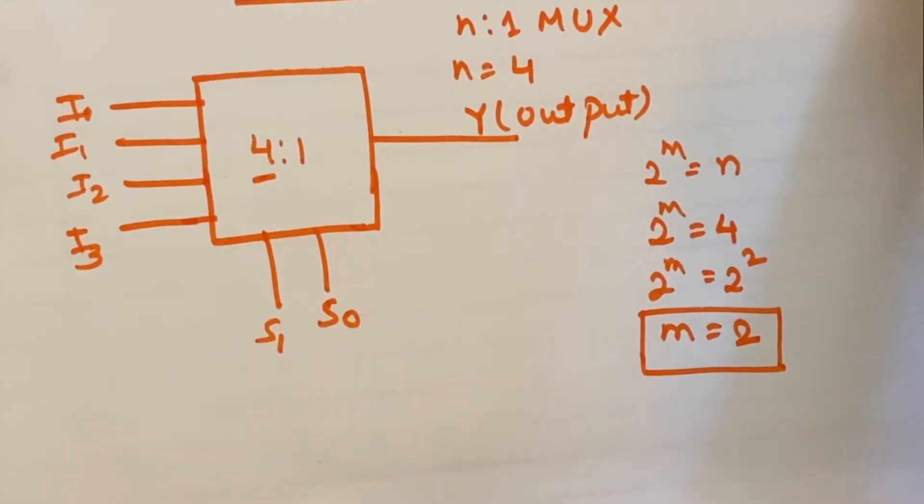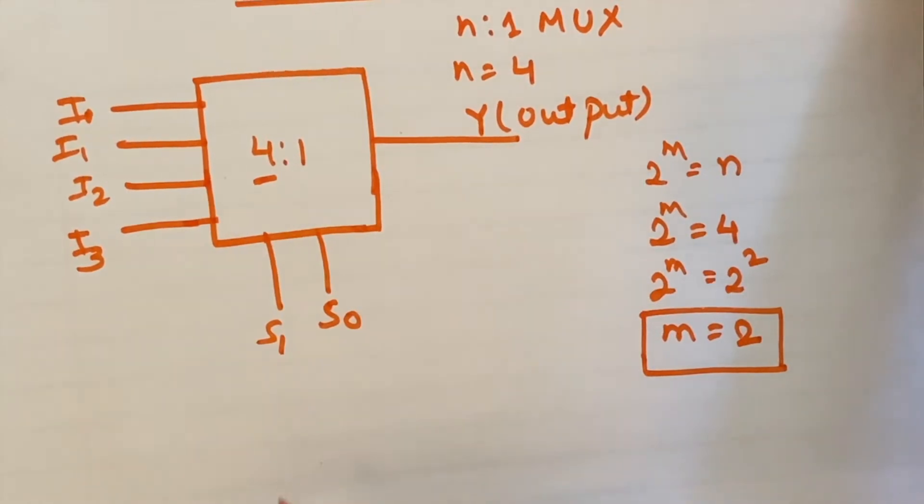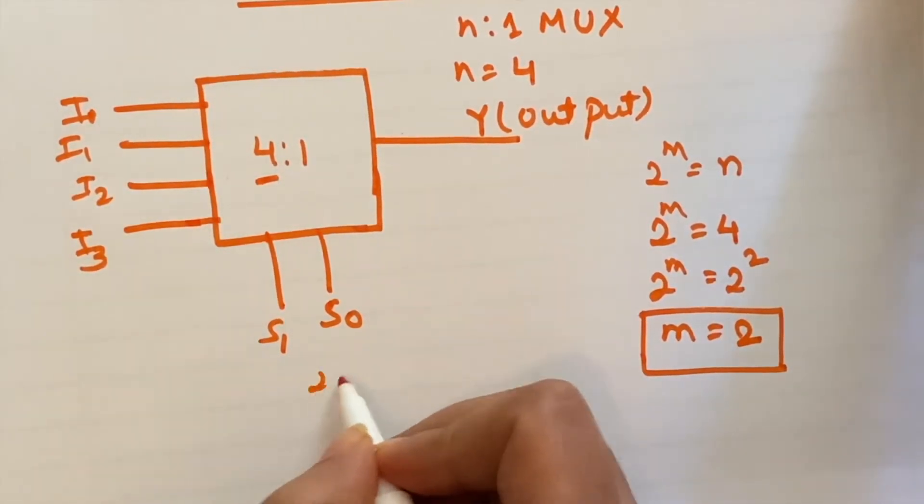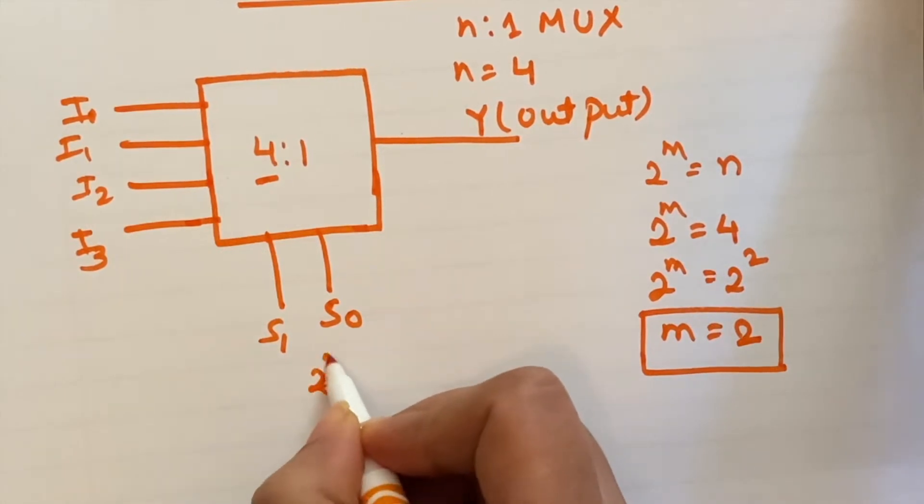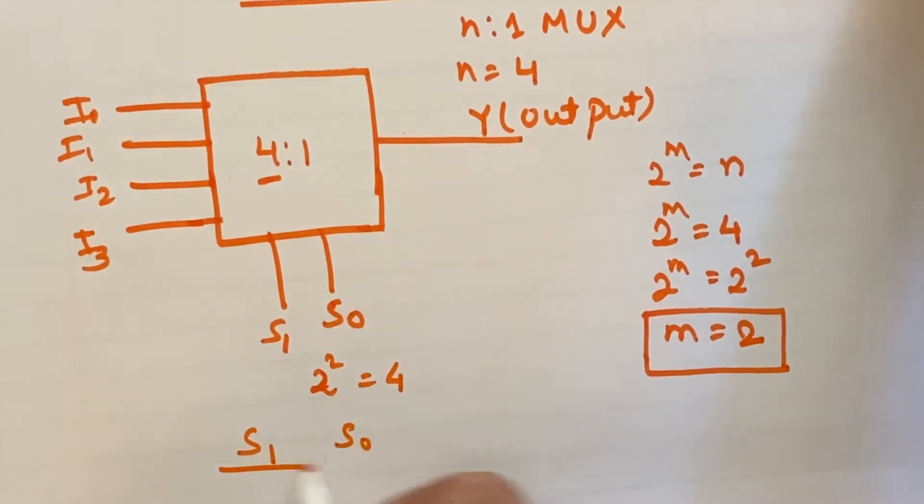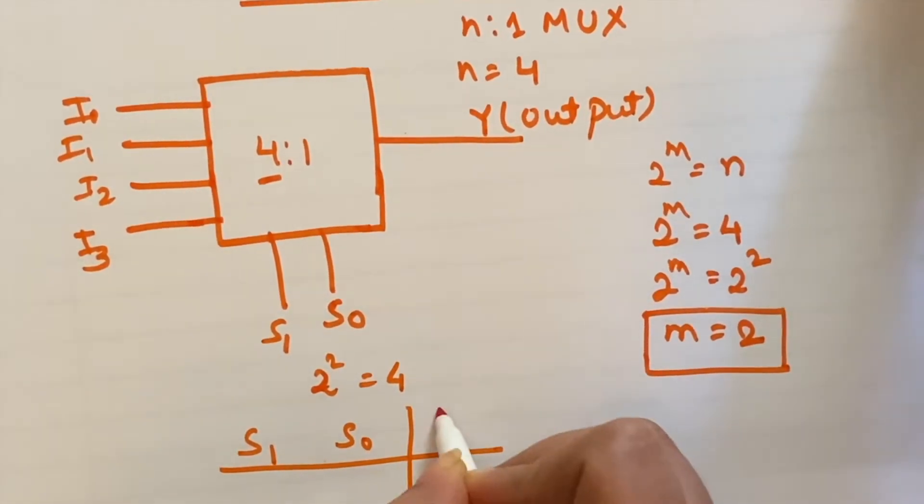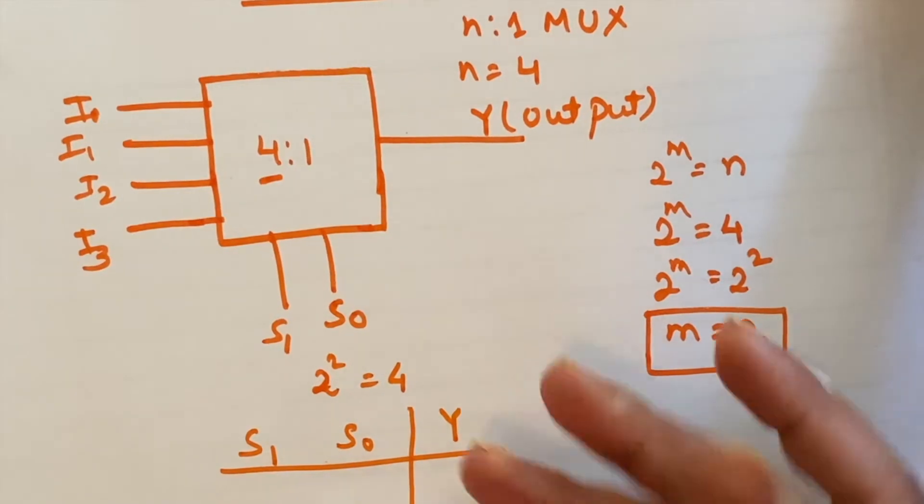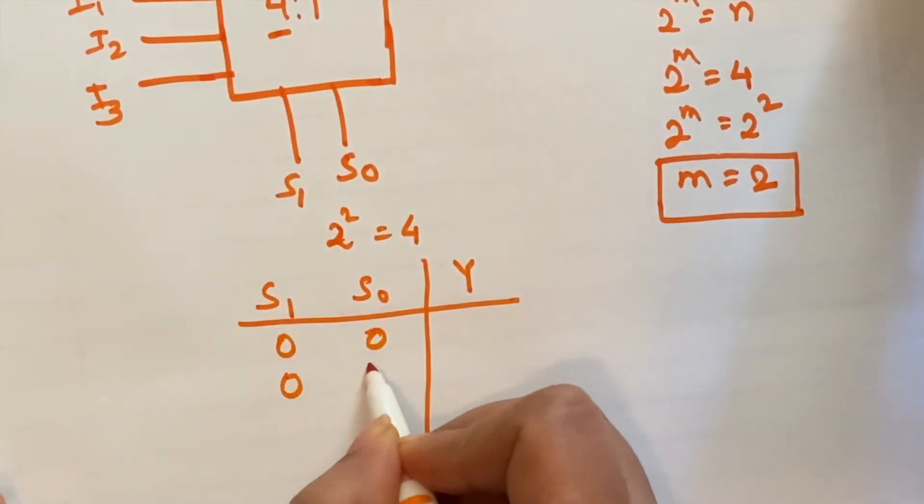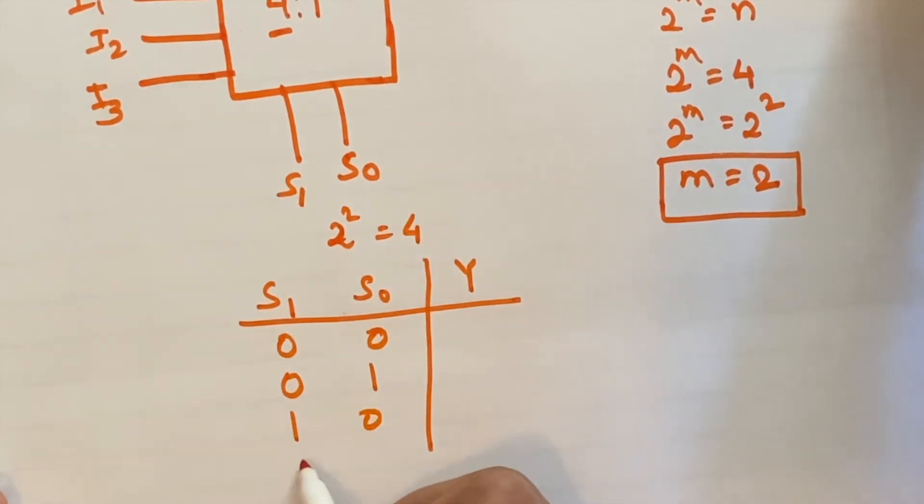Let's check out the function table of 4 is to 1 MUX. So s1 and s0, these are two selection lines, so there will be four combinations, means 2 to the power 2, 4 combinations input. So the function table will be: the output function table will be 0 0, 0 1, 1 0, 1 1.